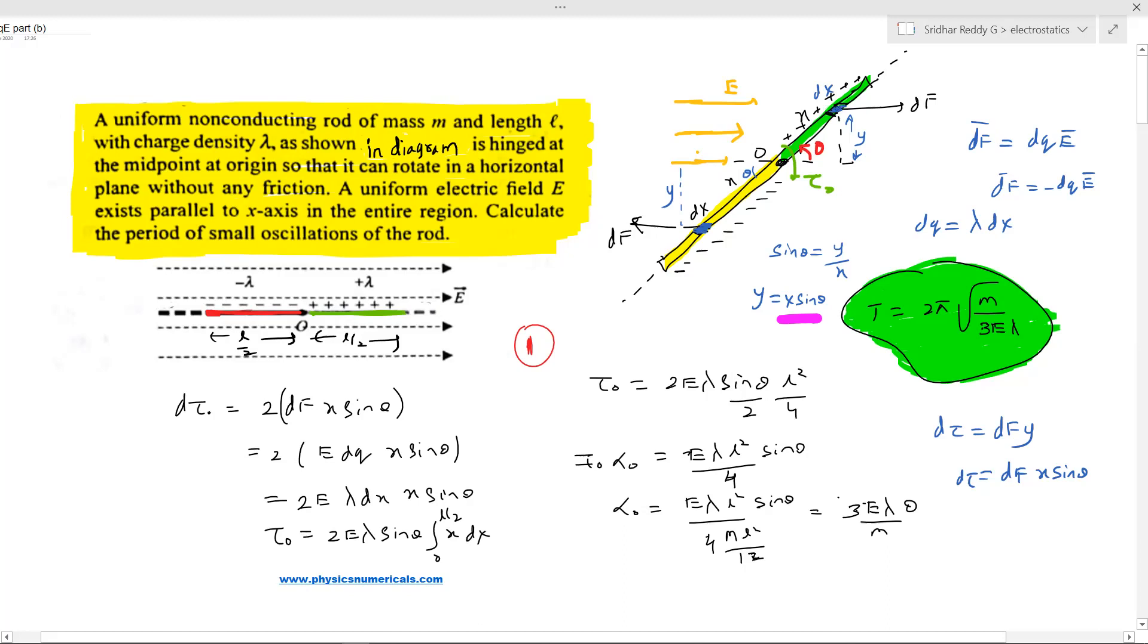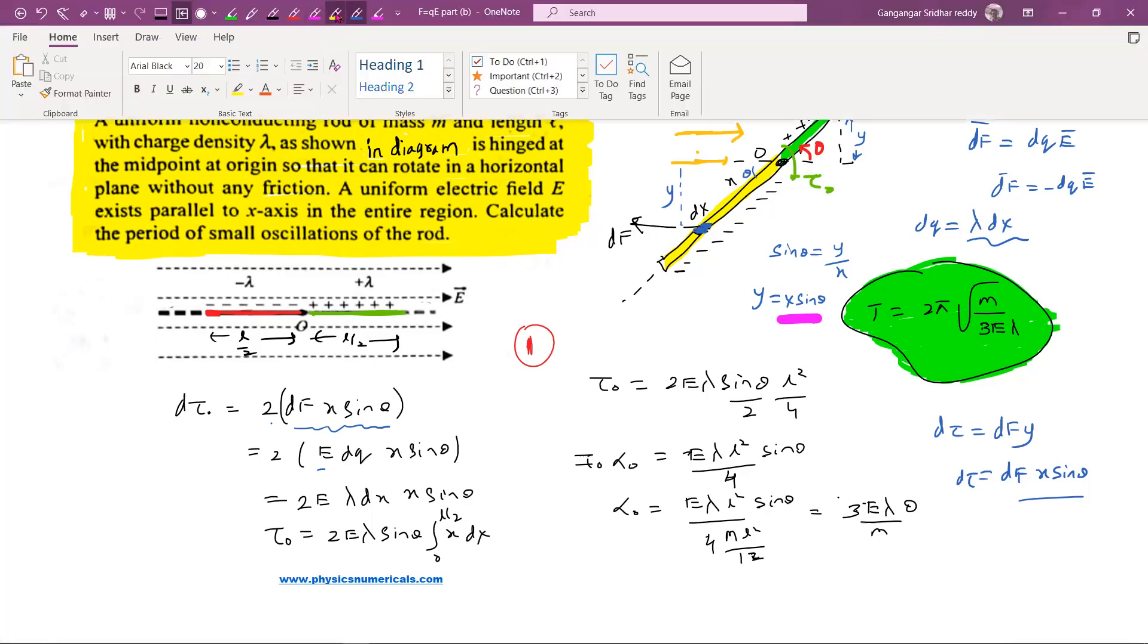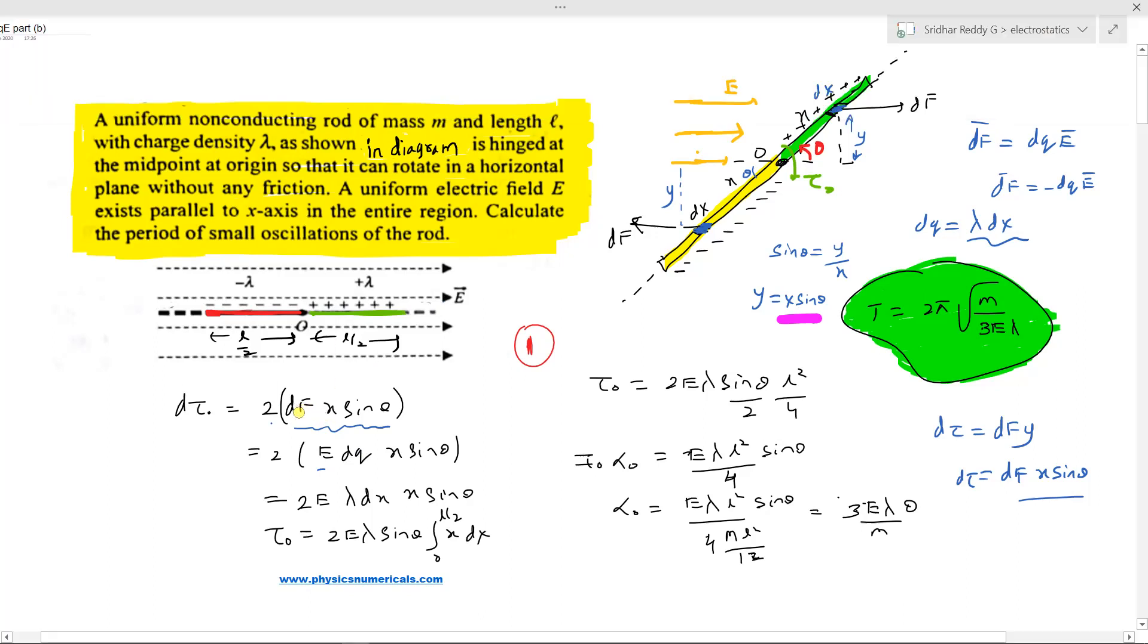Look at both torques - the torque due to the positive charge element and due to the negative charge element should both be clockwise. Therefore, I'm writing two times df × x sin θ. Now, what can you write? df = e dq, and dq = λ dx.